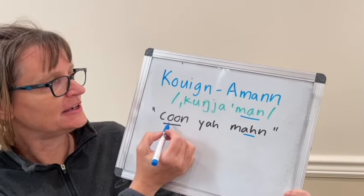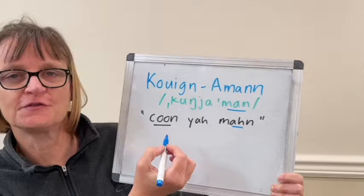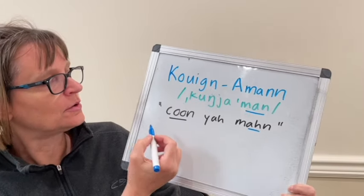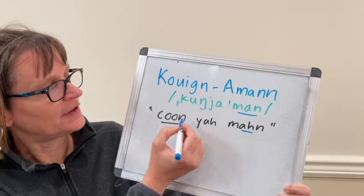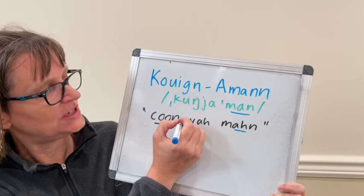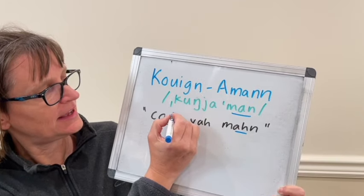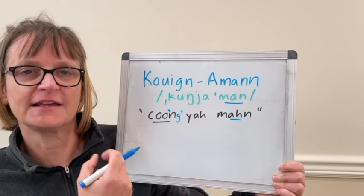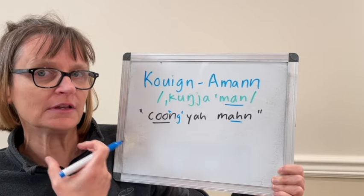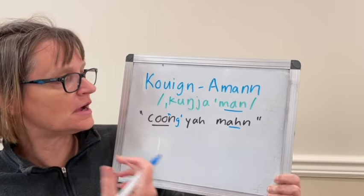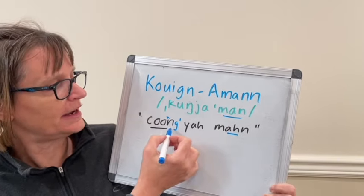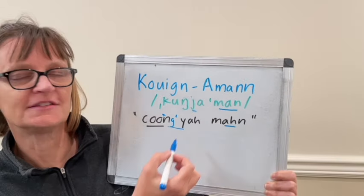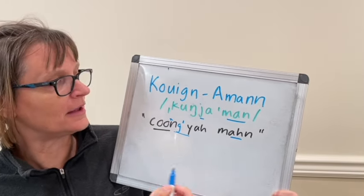And then we have some secondary stress on the first syllable: kunyaman. We have kind of an NG-N sound here — not exactly 'kung,' but 'kunya,' 'kunya.' You're gliding from the NG into the 'yuh' sound: kunyaman.